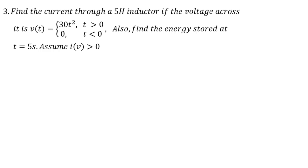Moving on to question 3, we are going to find the current through a 5 henry inductor if the voltage across it is given as v(t) = 30t² where t is greater than zero, and zero where t is less than zero. We are also going to find the energy stored at t equals 5 seconds, and we assume that i(t) is greater than zero.